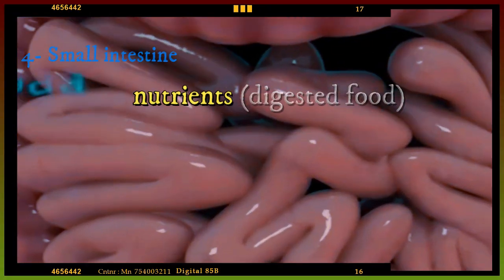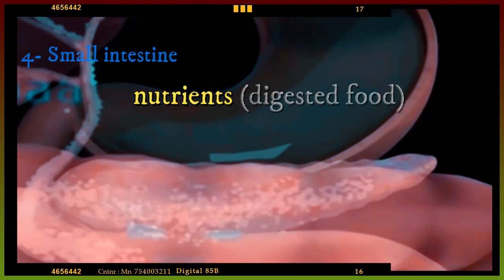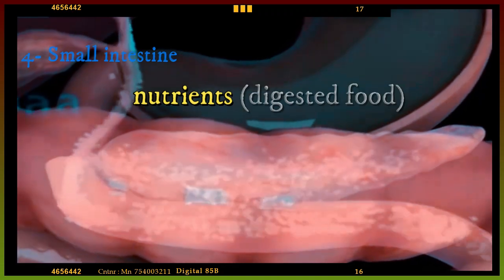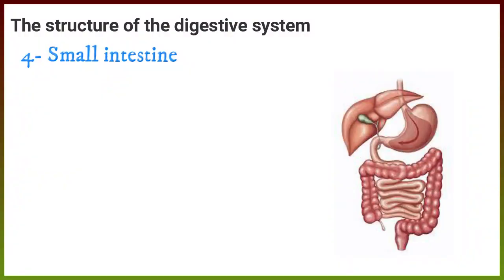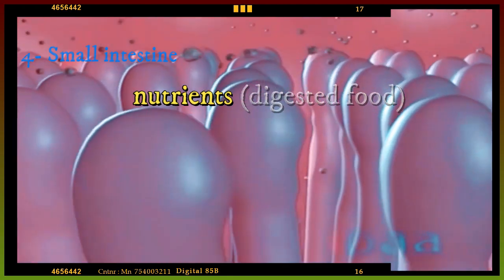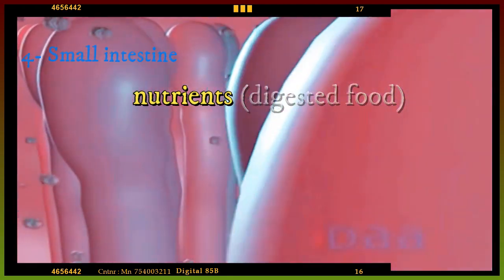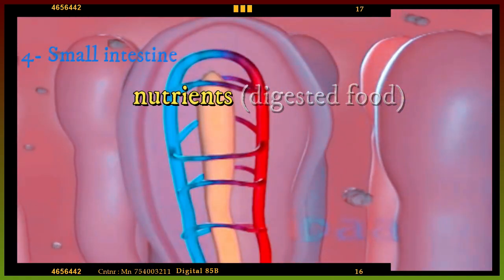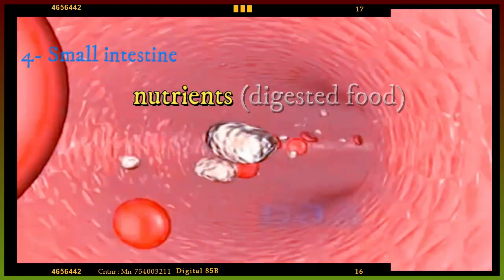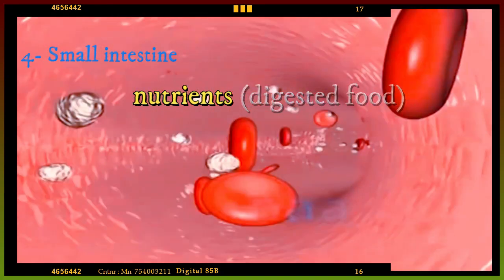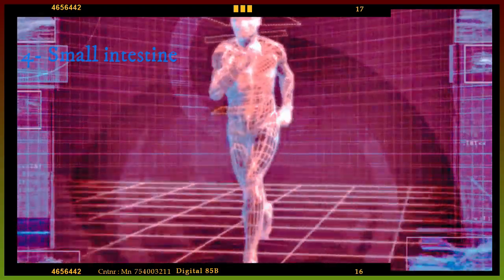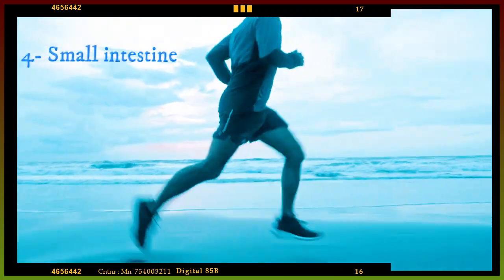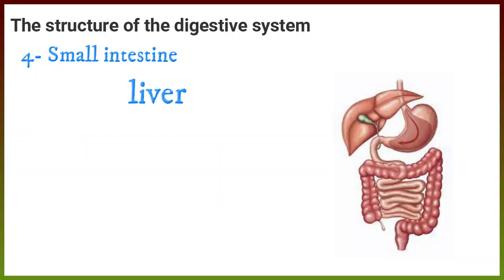The digested food refers to the simple nutrients broken down from food in the small intestine. These nutrients, the digested food, are absorbed through the wall of the small intestine as they enter into tiny blood vessels. The blood then carries the nutrients to all parts of the body to provide the body with energy.